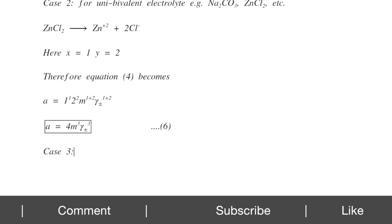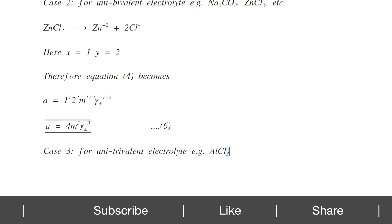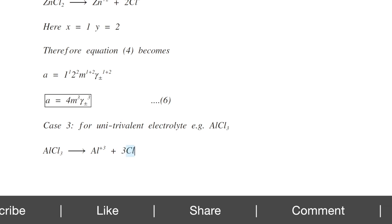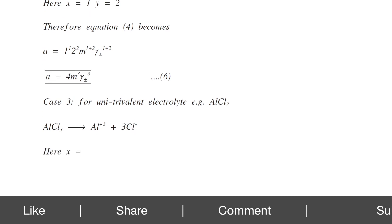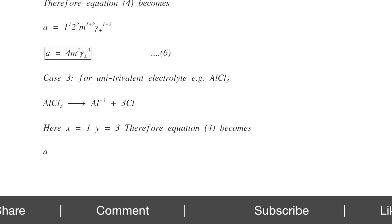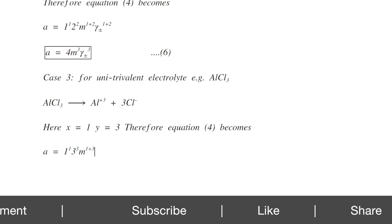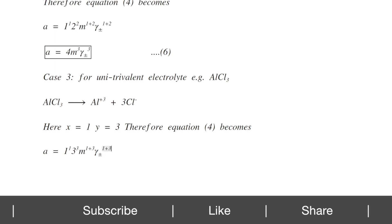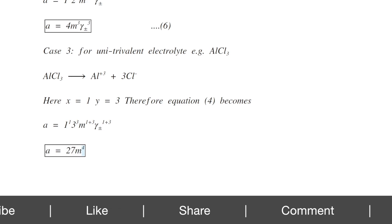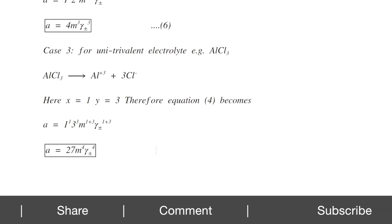Case 3: uni-trivalent electrolytes — example is AlCl₃. AlCl₃ in solution produces 1 Al³⁺ ion and 3 Cl⁻ ions, so X equals 1 and Y equals 3. Equation 4 becomes A equals 1^1 × 3^3 × M^(1+3) × Gamma±^(1+3), which gives A equals 27·M⁴·Gamma±⁴. This is equation number 7.